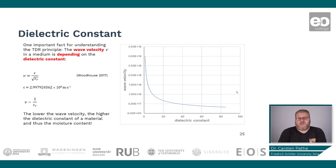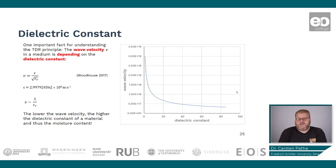To come back to our TDR measurement, there is another important relation shown in the diagram on the left-hand side: the relation between wave velocity and the dielectric constant. The higher the dielectric constant, the slower the wave velocity. And when knowing this, we can actually draw conclusions on the moisture content of the soil.